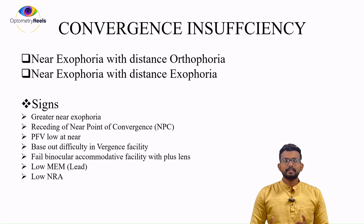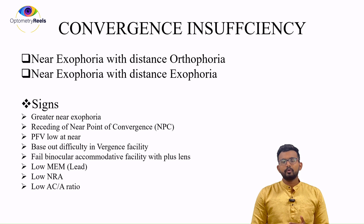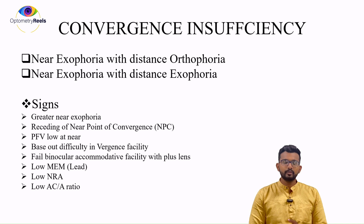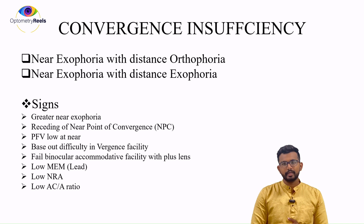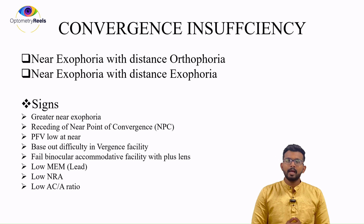The main thing here is there will be a low AC/A ratio. Usually when doing the binocular vision assessment, we follow the gradient method of AC/A ratio — we already have videos on AC/A ratio, how to do it with the gradient method with modified Thorington.